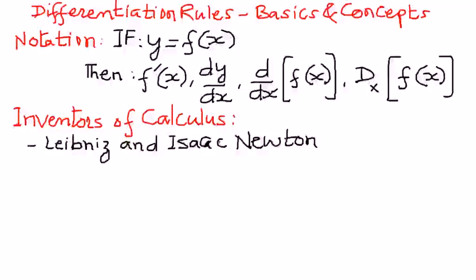The dy by dx notation was coined by the great mathematician Leibniz, one of the inventors of calculus. These are the two people who invented or contributed to calculus: Leibniz and Isaac Newton.